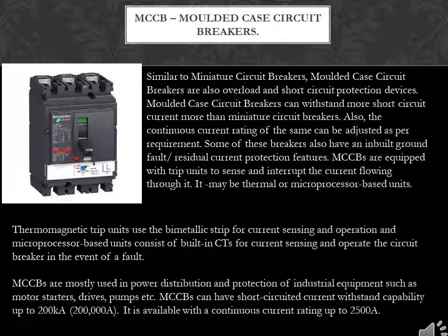MCCBs are equipped with trip units to sense and interrupt the current flowing through them. These may be thermal or microprocessor-based units. Thermomagnetic trip units use a bimetallic strip for current sensing and operation, while microprocessor-based units consist of built-in CTs for current sensing and operate the circuit breaker in the event of a fault. MCCBs are mostly used in power distribution and protection of industrial equipment such as motor starters, drives, pumps, etc.